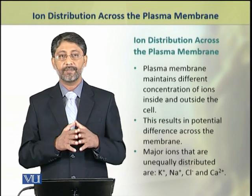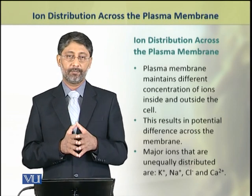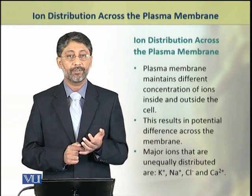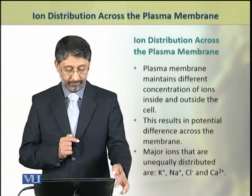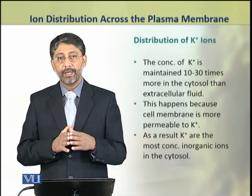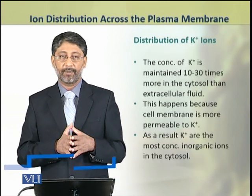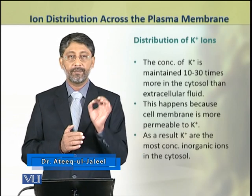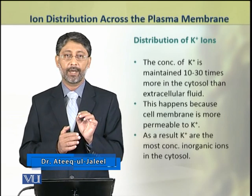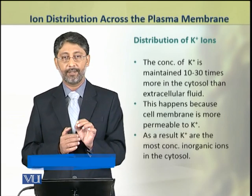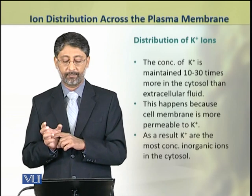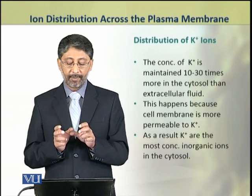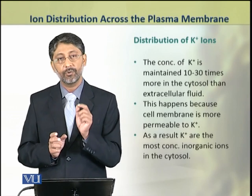The major ions that are unequally distributed across the membrane include sodium, potassium, calcium, and chloride ions. First we shall discuss the distribution of potassium ions. The concentration of potassium ions is maintained 10 to 30 times higher inside the cell than outside, because the plasma membrane is more permeable to potassium ions.